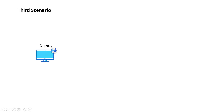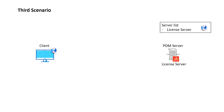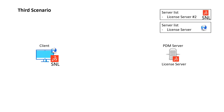Now let's talk about the third scenario, which is a little more complex than the other two. For this case we have a PDM client, our regular PDM server with a license server, and in the PDM license node we have the license server configured as our primary license server. But we also have the SNL client license manager installed on that machine as well, and that SNL is going to contain a license server number two — which may be somewhere else within or outside our network.